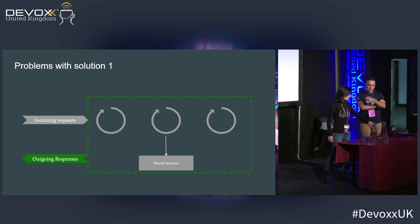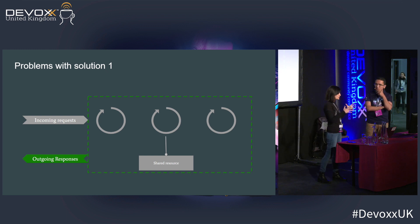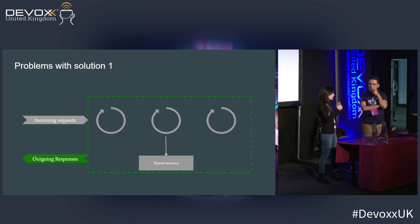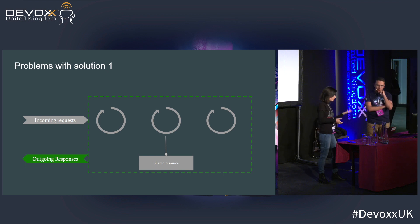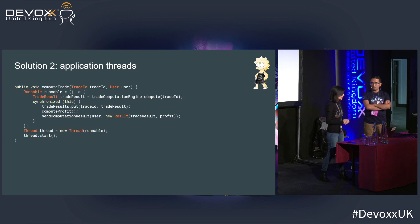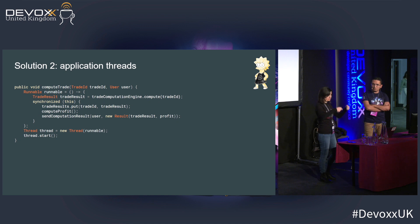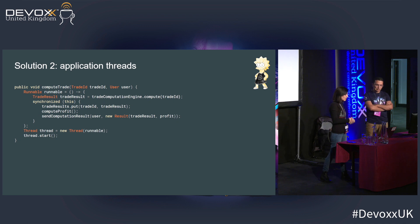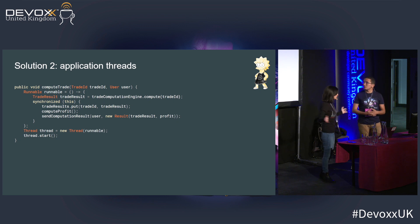In that diagram, the round shapes represent threads coming into the system, and the shared resource is the lock. What you're saying is I might reach a point where my service cannot handle any more threads because I'm blocking them all, potentially for extended periods. So what I propose is creating a runnable — when I receive a request, instead of treating it on that same calling thread, I'll create a runnable with all my business logic, start a new thread, put the runnable on it, and return control to the caller.